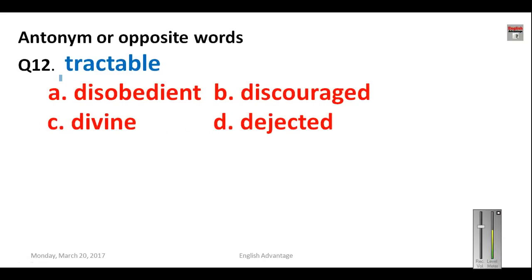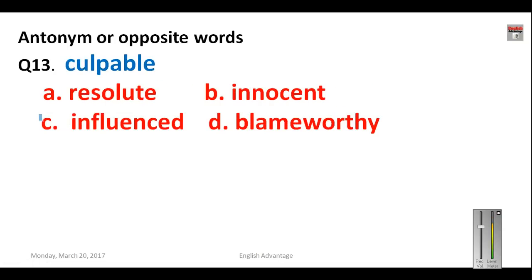Question number twelve: 'tractable.' A tractable person is very obedient and controllable. The question asks for the antonym of tractable. If you are not tractable, you are disobedient. Your answer will be A: disobedient. Other options are divine, discouraged, and dejected.